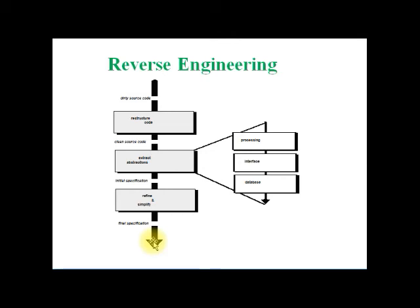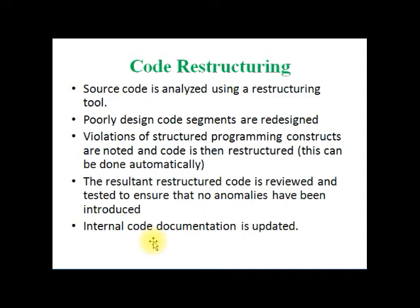Code restructuring follows after identifying dirty code. The source code is analyzed using restructuring tools, poorly designed code segments are redesigned, violations of structured programming concepts are noted, and the code is restructured. Any violations of standardization and problematic statements are cleared and poor design is modified. The resultant restructured code is reviewed and tested to ensure no anomalies — threats to your source code — have been introduced. Internal code documentation is also updated after cleaning the code.